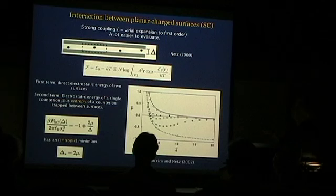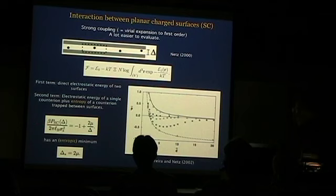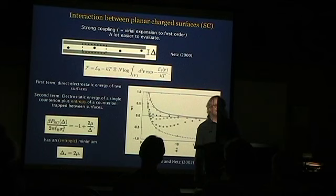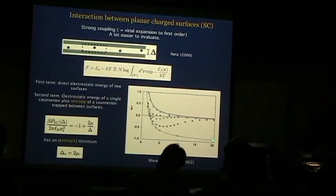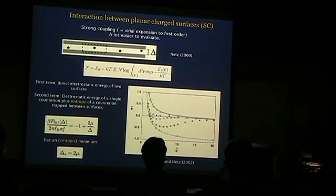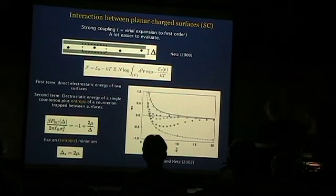In the strong coupling regime with highly charged counter-ions between surfaces, the expression for the osmotic pressure or interaction pressure becomes quite simple. The simulations always lie between the two limits. Even if you cannot evaluate the interaction pressure exactly for any value of the surface charge density, it's still important to have these two limiting cases — anything that can happen electrostatically has to be between them, like the Debye-Hückel limiting law.